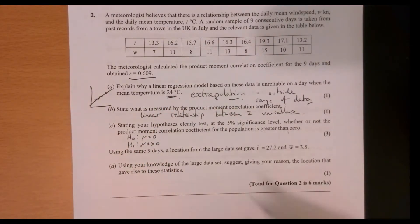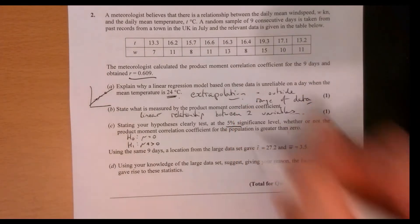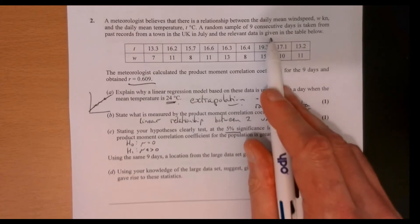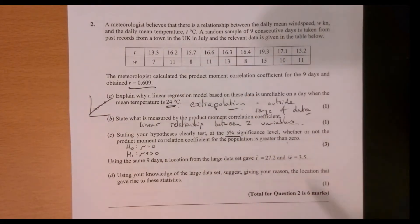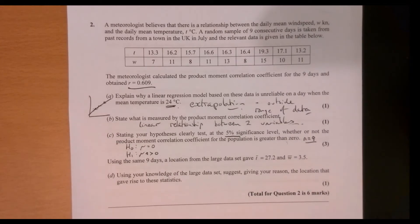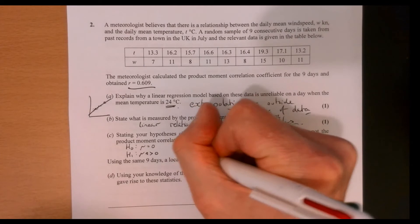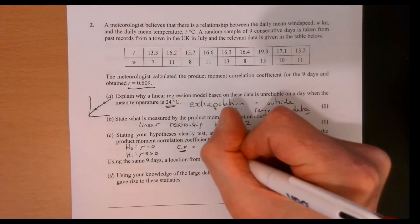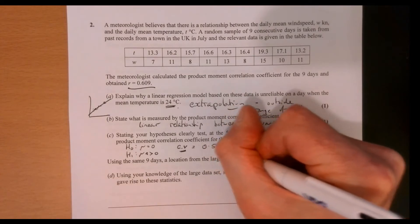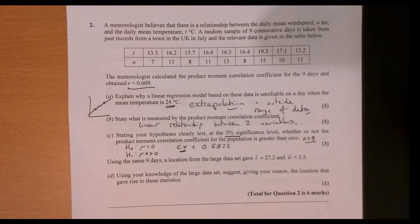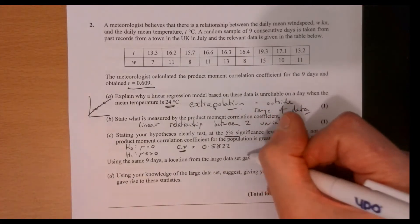And we're working at the 5% significance level. Right, we know that. We know we've got, it's nine days. So n is nine. So all you need to do now is to use your tables to look up the critical value. So go and look in your tables. And the critical value for this one is 0.5822. Right, you can go and look at that. Now, we would also need to make sure that we make this statement.